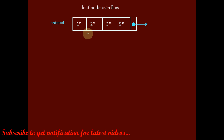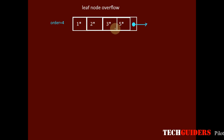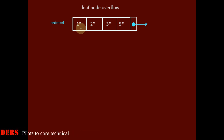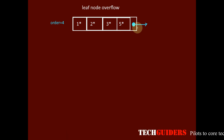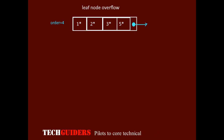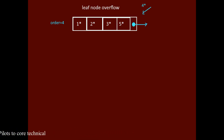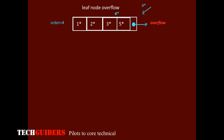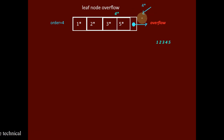Consider a leaf node whose order n equals 4, where n is the maximum number of key-data pointer pairs that a leaf node can accommodate. This leaf node can hold a maximum of 4 key-data pointer pairs and one additional node pointer which points to the next leaf node. Thus this leaf node is full. If we try to insert a new entry to this leaf node, an overflow will occur. To handle the overflow, all the entries of this leaf node are considered in sorted order, including the new entry we are trying to insert.